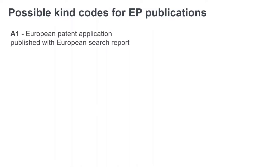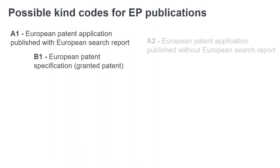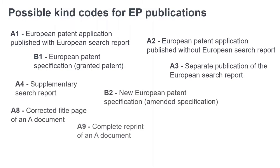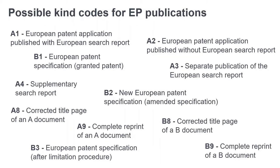There is however not only one type of A or B publication. There could be several depending on the procedural requirements. This is why the A and B publications can receive an additional digit which further specifies the type of publication. Together they are called document kind codes, indicating, as the name says, the kind of publication.